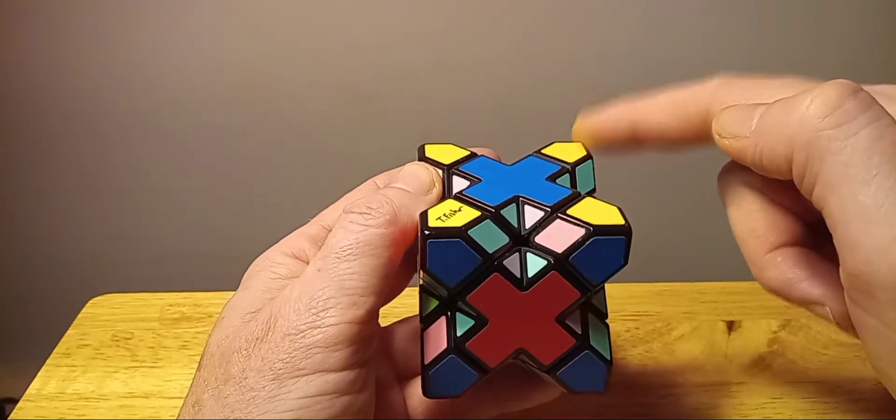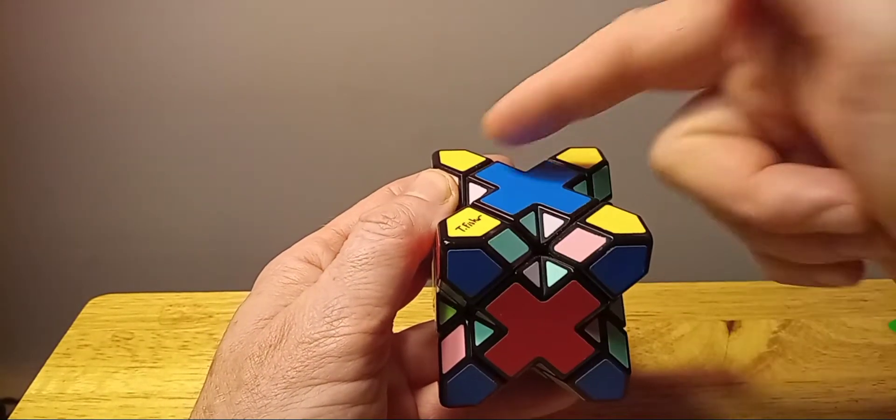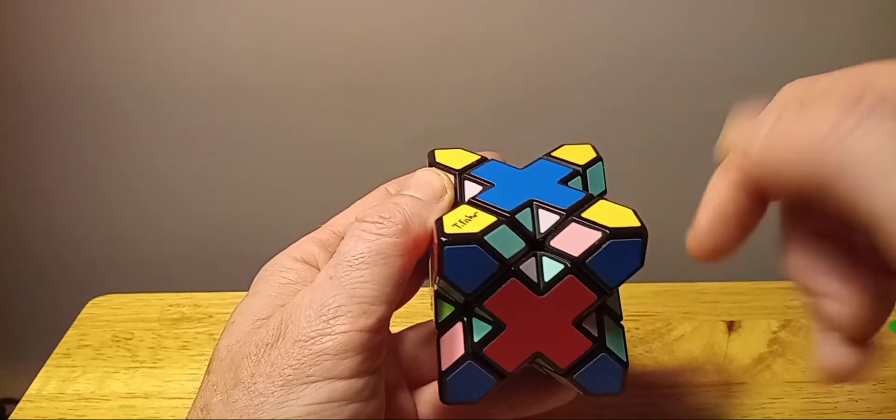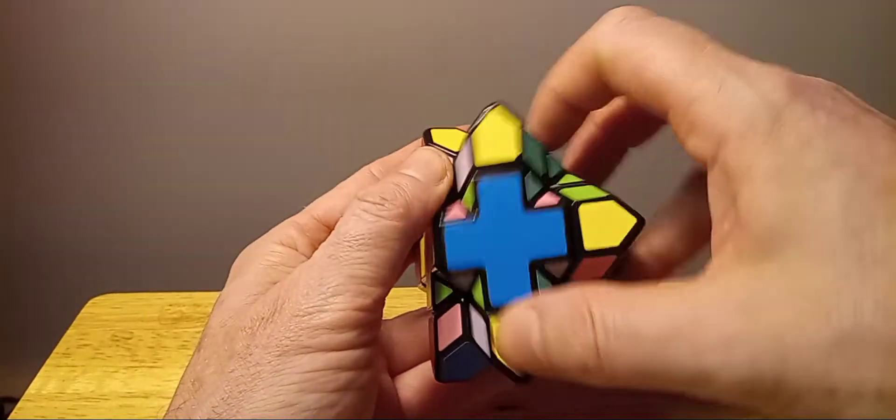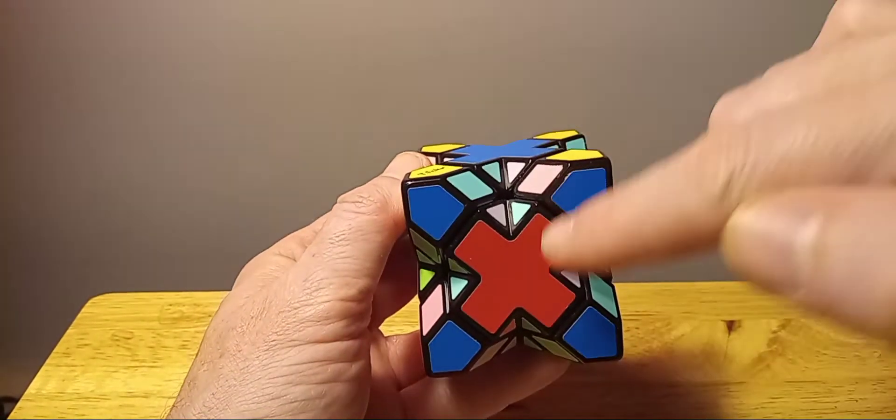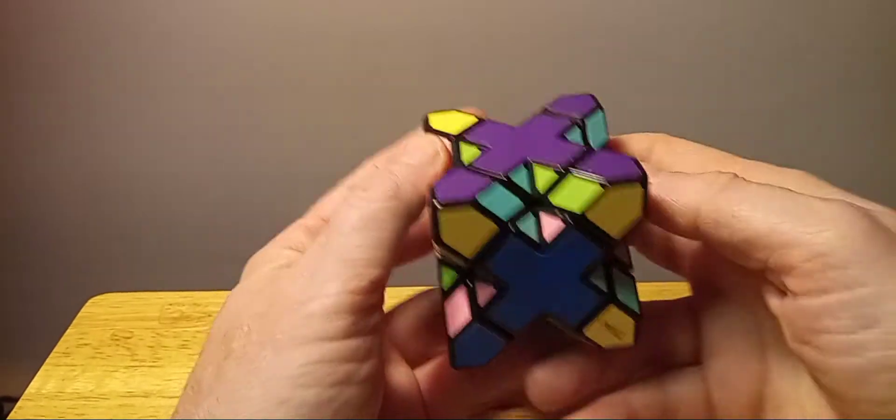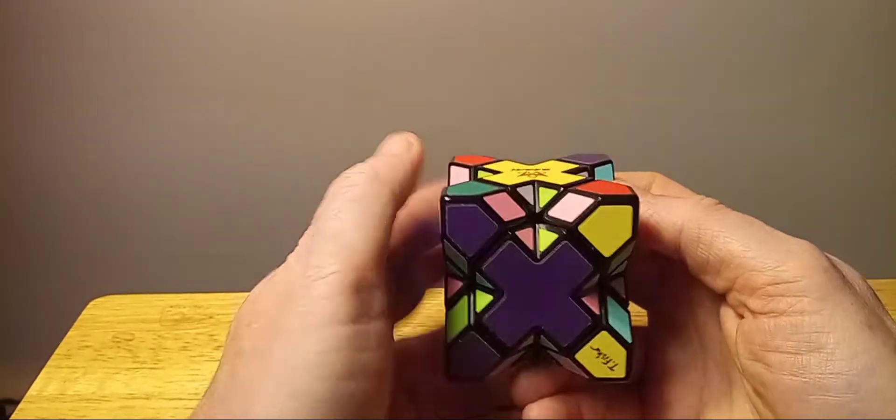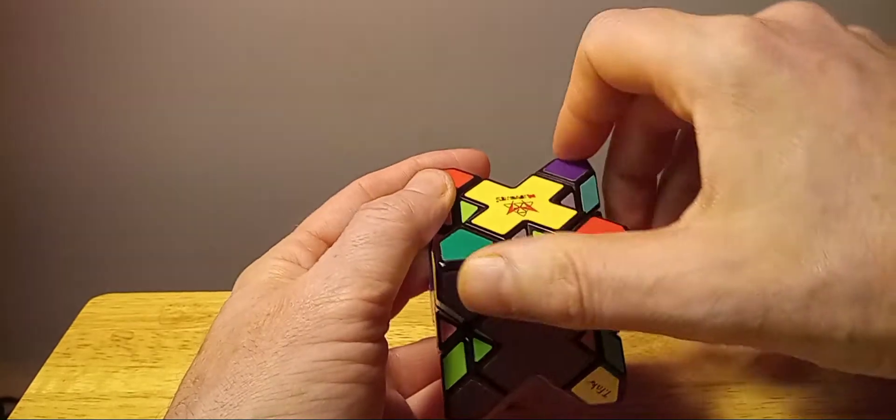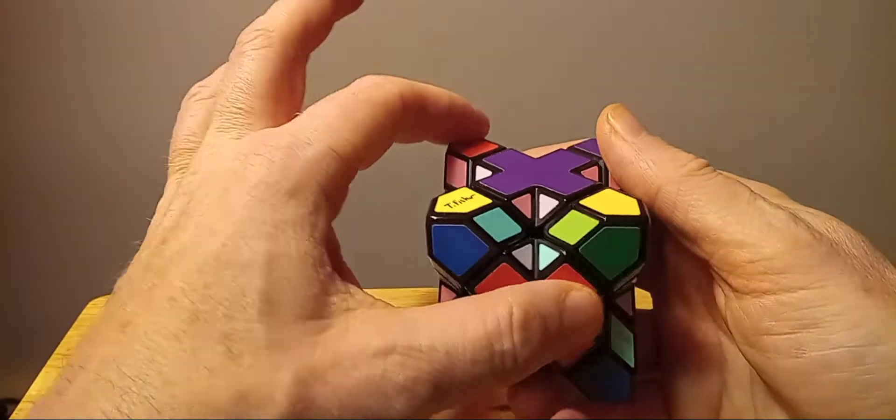So we'll start with this side here, the right, and we're going to come down then we're going to use the left and come down. So we'll do a right down because we're dropping the blue here. Right down, left down, right up, and then left up.